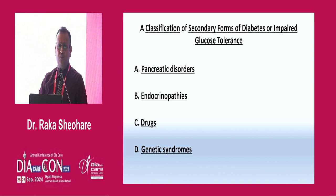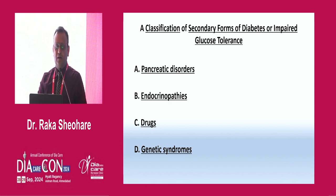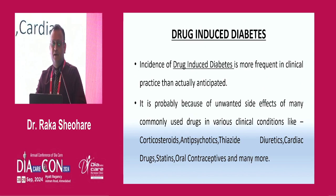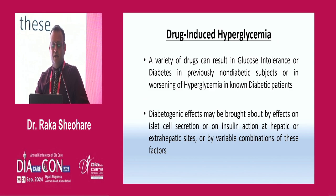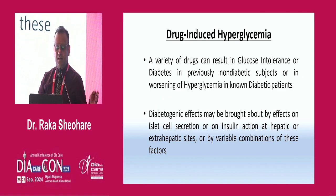Most of the treatment for these conditions is surgical, so I won't go into treatment details. Coming to drugs: drug-induced diabetes is more frequent in our health scenario than we realize, because we are exposed to many drugs nowadays. Commonly implicated drugs include steroids, antipsychotics, thiazide diuretics, cardiac drugs, statins, oral contraceptives, and many more. With a proper clinical history — taking history, family history, and hyperglycemia pattern — you can conclude whether diabetogenic effects are brought about by effects on islet cell secretion or insulin action at hepatic or extrahepatic sites.